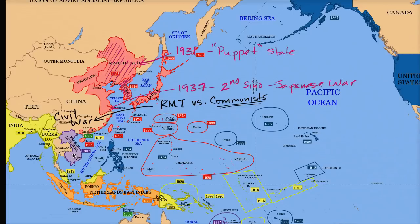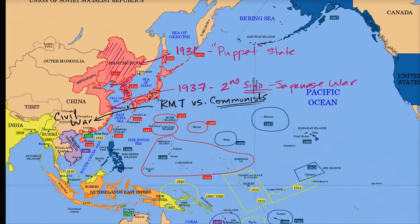It isn't until Germany invades Poland in 1939 that you have the formal beginning of World War II. Regardless of whether you consider the Second Sino-Japanese War a formal beginning — and it's called the Second because there was a First Sino-Japanese War in the late 1800s — this conflict is incredibly brutal and bloody, with a lot of civilians affected. It causes the Chinese Civil War to take a back seat to fighting off the aggressor of Japan in 1937.